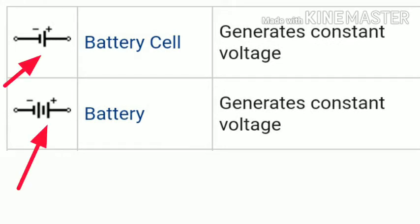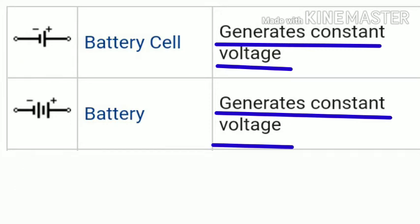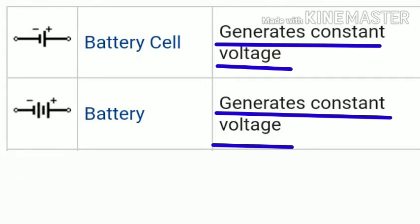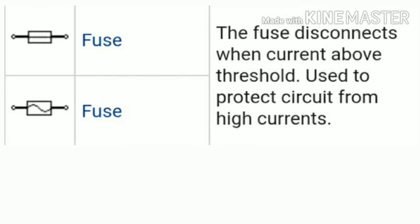The next components are the battery cell and the battery. The battery cell generates a constant voltage, and the battery also generates a constant voltage. The battery cell and battery are used as electrical sources of energy and are very common symbols in electrical engineering.